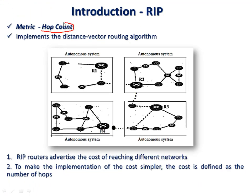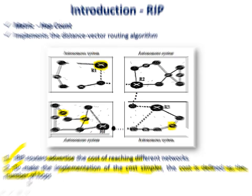Hop count is simply the number of networks a packet travels through when forwarded from source to destination. When the system starts, routers are booted, initial information is collected by all individual routers in the intranet system, and the best route is selected based on number of hops — number of networks equals number of hops.